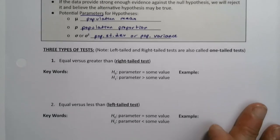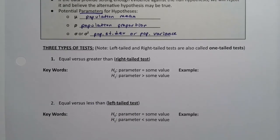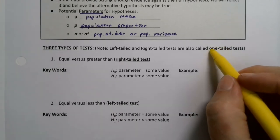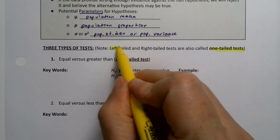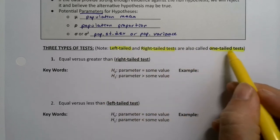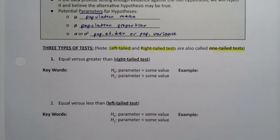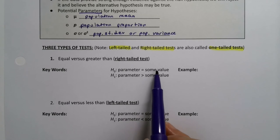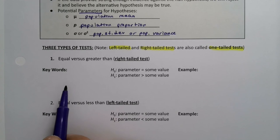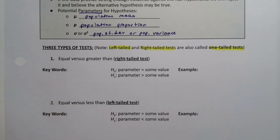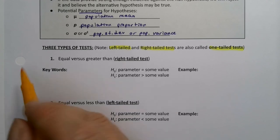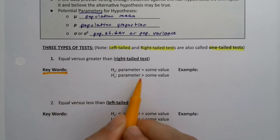We can either have a left-tailed test, a right-tailed test, or a two-tailed test. The left and right-tailed are both called one-tailed tests because they only go in one direction. A right-tailed test, which is a one-tailed test, says that the parameter equals some value in the null and the parameter is greater than some value in the alternative. Let's think of some keywords you're going to be looking for when you see problems for hypothesis tests. How are you going to know it's a right-tailed test?